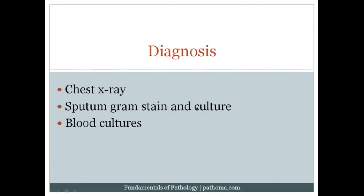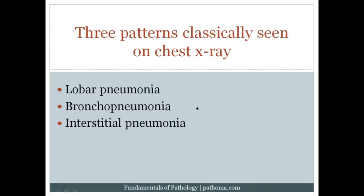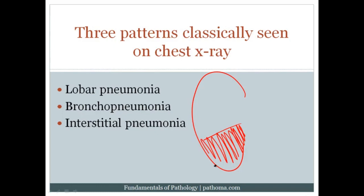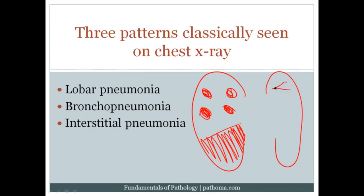Blood cultures are also useful because organisms are often in the blood. On chest X-ray, there are three classic patterns. First, lobar pneumonia, where consolidation takes over an entire lobe. Second, bronchopneumonia, where consolidation runs along the small airways in a patchy distribution. Third, interstitial pneumonia, where there is no consolidation but instead inflammation within the interstitium of the lung, producing increased lung markings on X-ray.